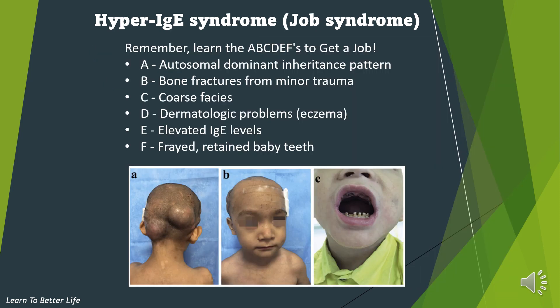Remember, learn the ABCDEF to get a job: A — Autosomal dominant inheritance pattern. B — Bone fractures from minor trauma. C — Coarse facies. D — Dermatologic problems, eczema. E — Elevated IgE levels. F — Frayed, retained baby teeth.